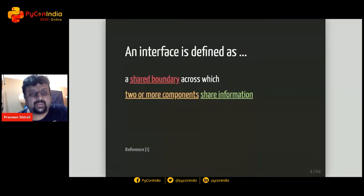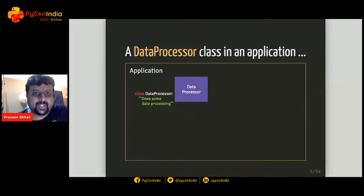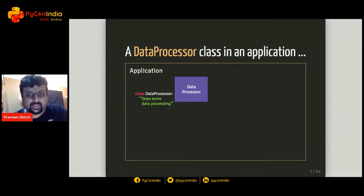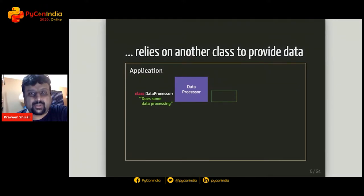So what is an interface? An interface is a shared boundary across which two or more components share information. Let's explore this with an example. Consider an application — represented by a box. This application has a class called DataProcessor, which is responsible for processing some data. The DataProcessor relies on another component somewhere inside this application to help fetch that data.